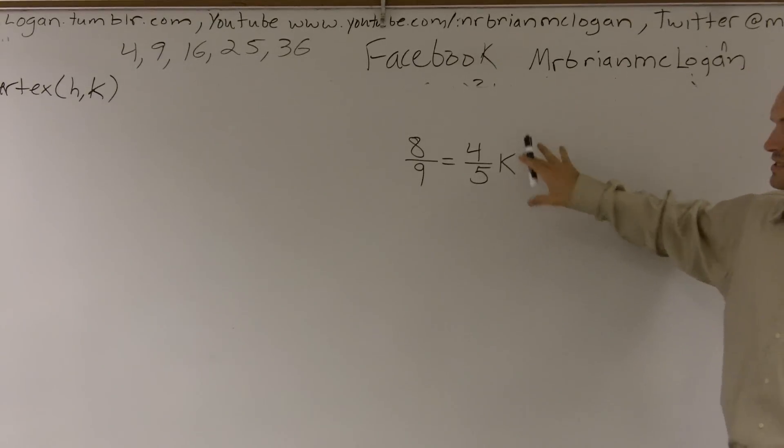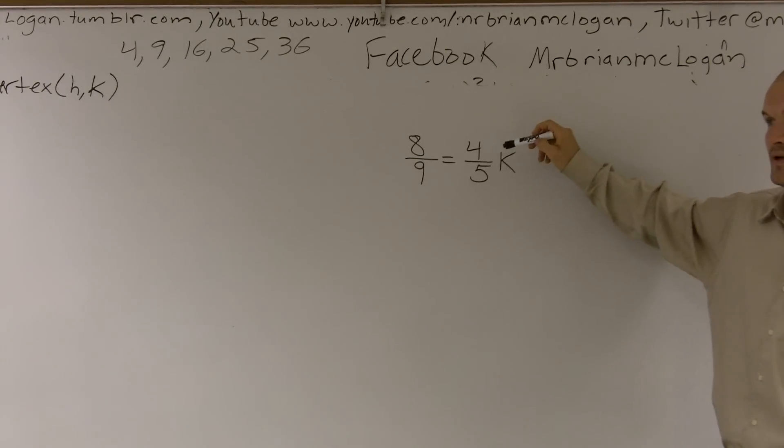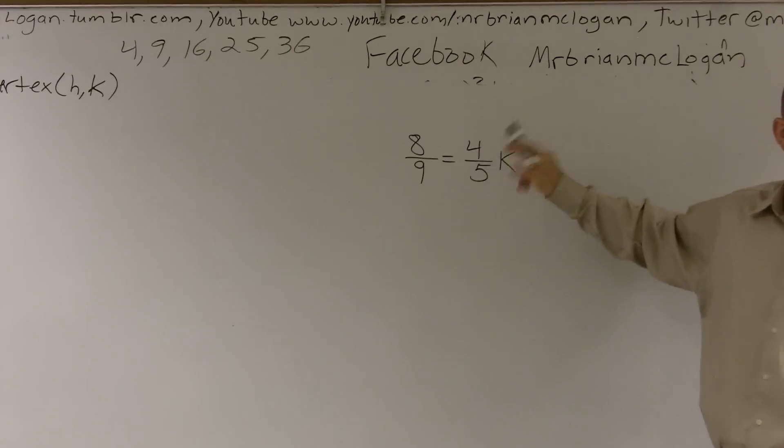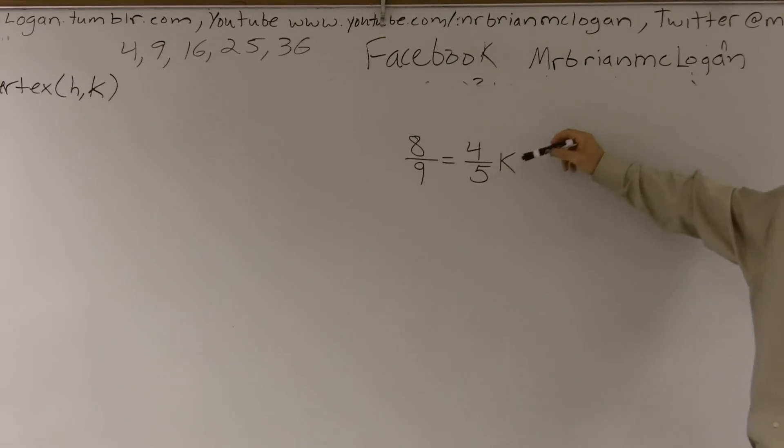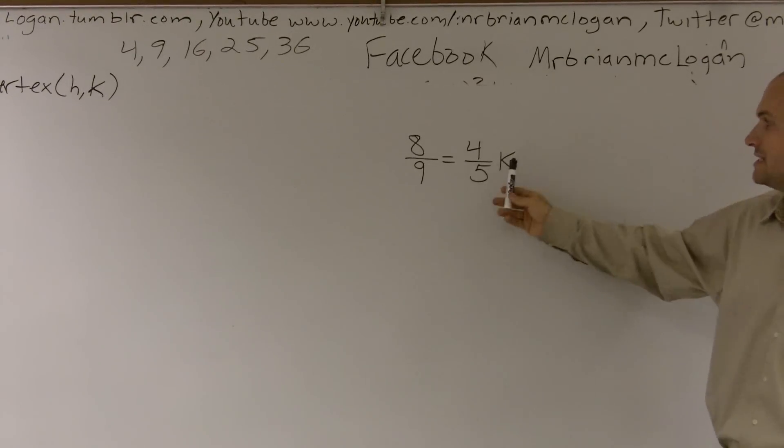First way, let's look at our variable, which is k. Then we need to determine what is happening to k. There's no addition, there's no subtraction, and k is not right now being part of this fraction, so therefore what's happening is k is being multiplied by four-fifths of the fraction.